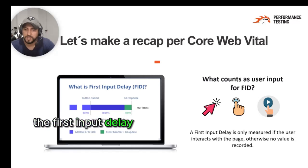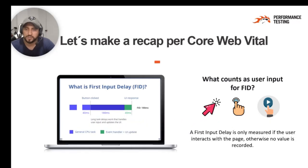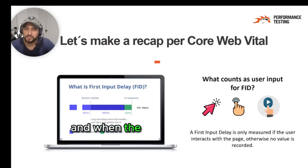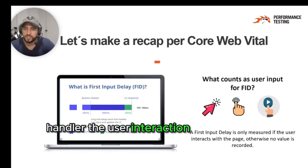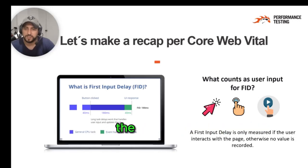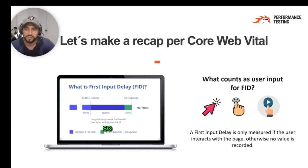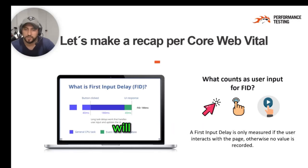The First Input Delay metric measures how much time elapses between when the user first interacts with the page and when the CPU becomes idle, which is when the event handler for the user interaction starts running. The time spent running the event handler does not count as First Input Delay. So if your CPU is idle, the First Input Delay will always be 0 milliseconds.